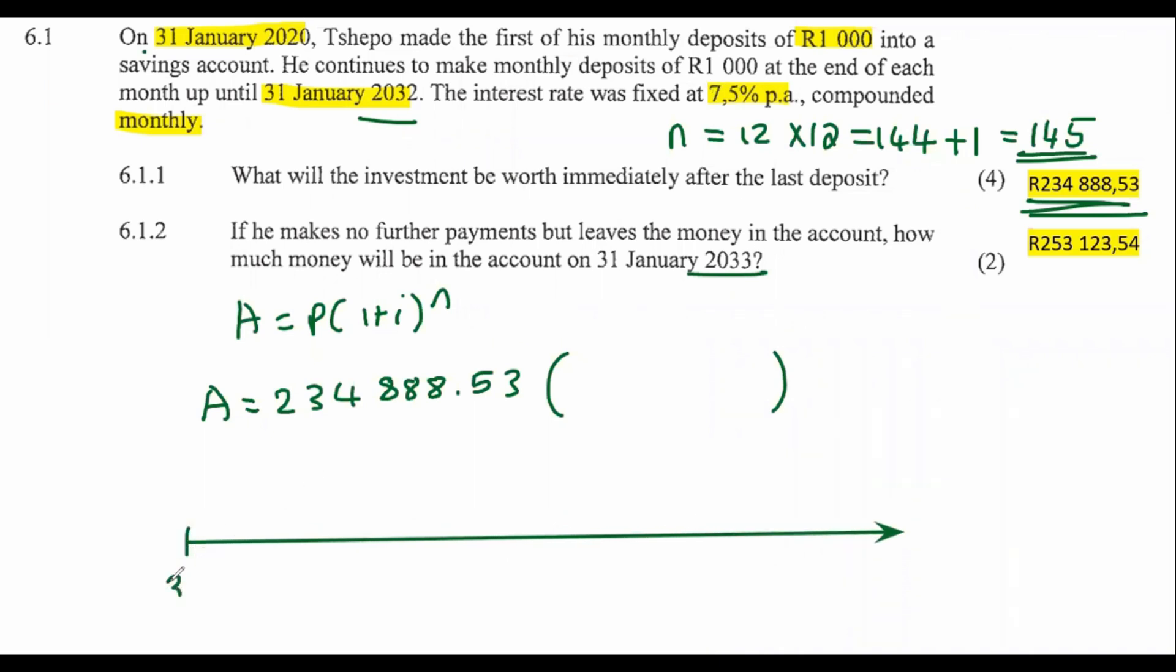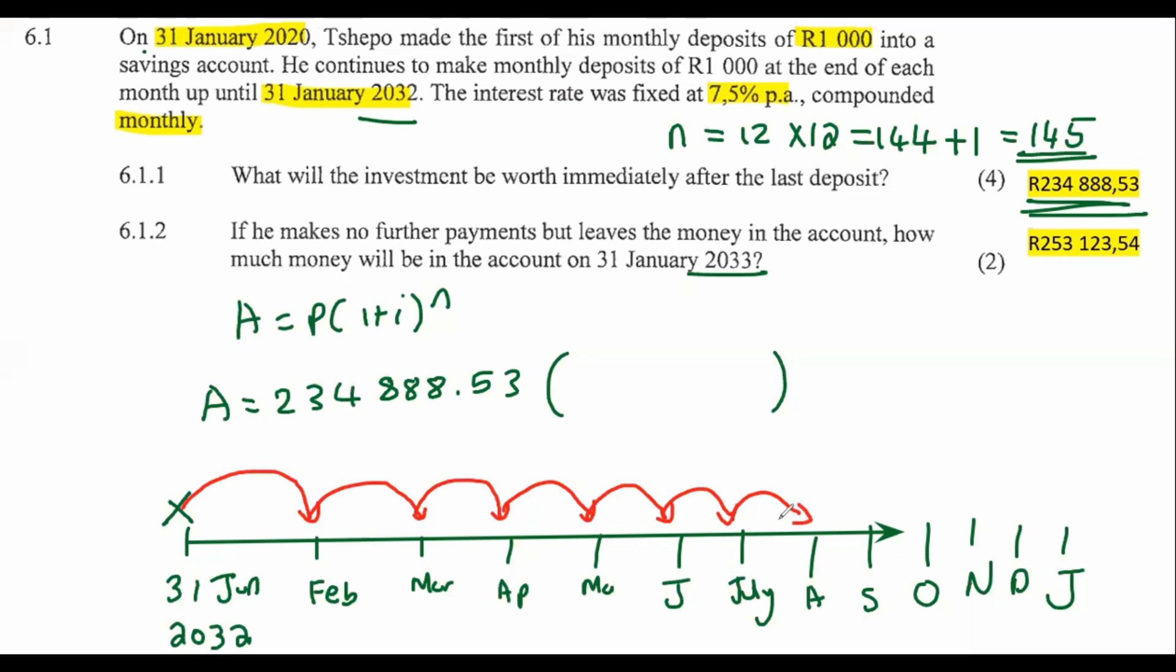I start here at 31 January 2032, then obviously that's going to go through February, March, April, May, June, July, August, September, October, November, December, and January. So if you look carefully guys, at the moment, we are over here, but we're not going to make any more payments. So you're not going to count the 31st of January. We're not making any payments or anything. All that we want to know now is how long is the money going to be in the bank for? So the money is still going to be in the bank for 1, 2, 3, 4, 5, 6, 7, 8, 9, 10, 11, 12 months.